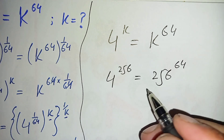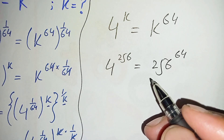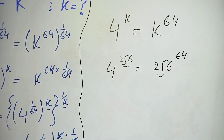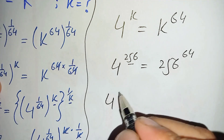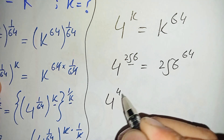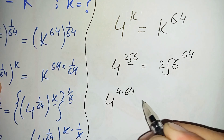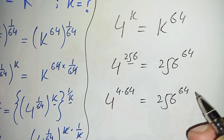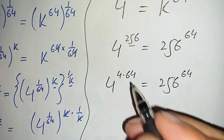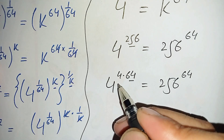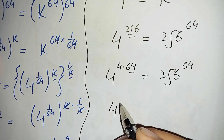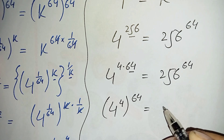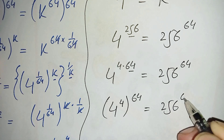To make both sides the same, we factorize the power 256 as 64 times 4. So 4 raised to power 256 is the same as 4 raised to power 4 times 64. Applying the exponential property, this becomes 4 raised to power 4, all raised to power 64. The right hand side remains 256 raised to power 64.